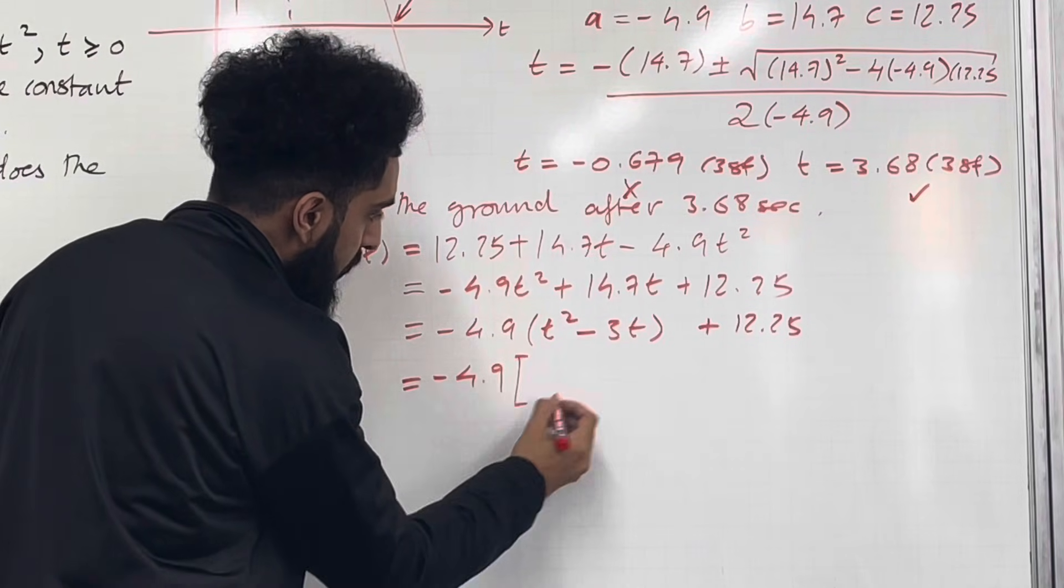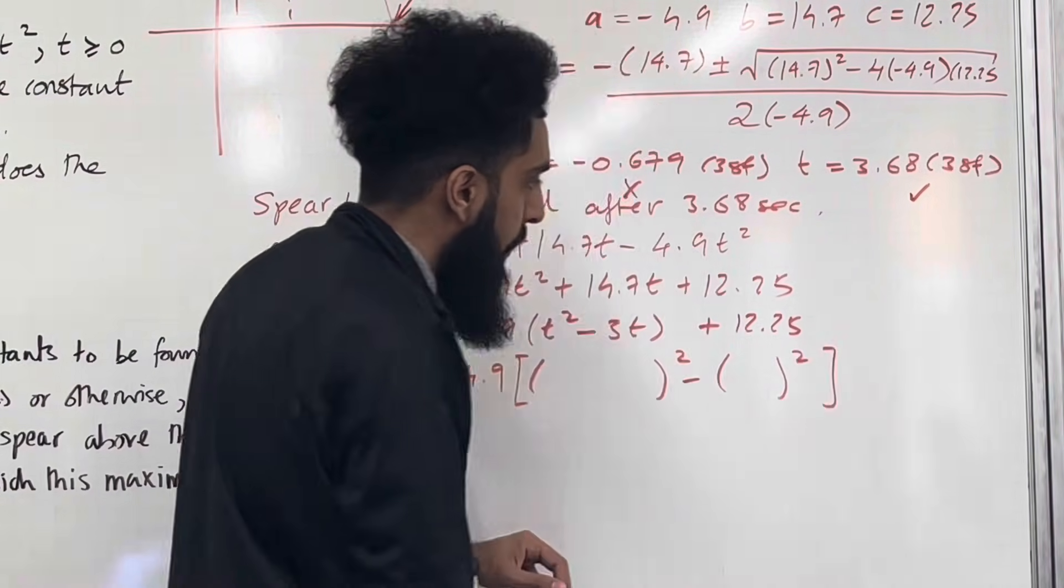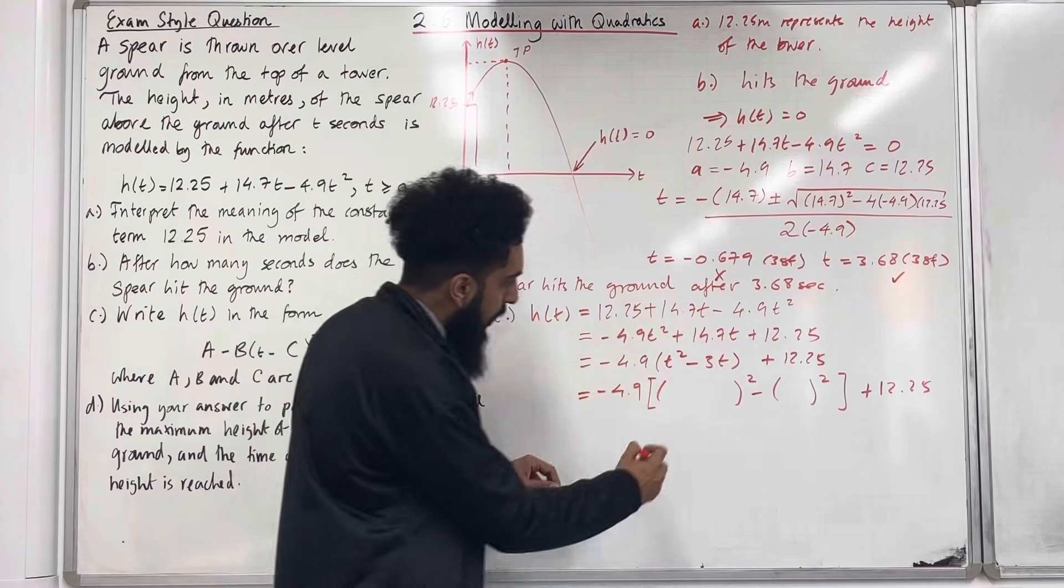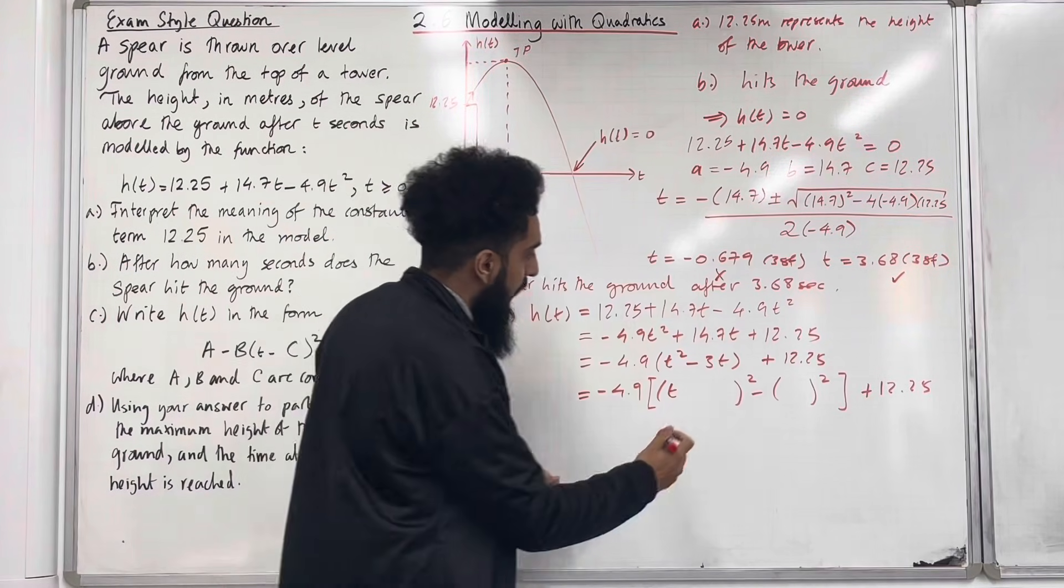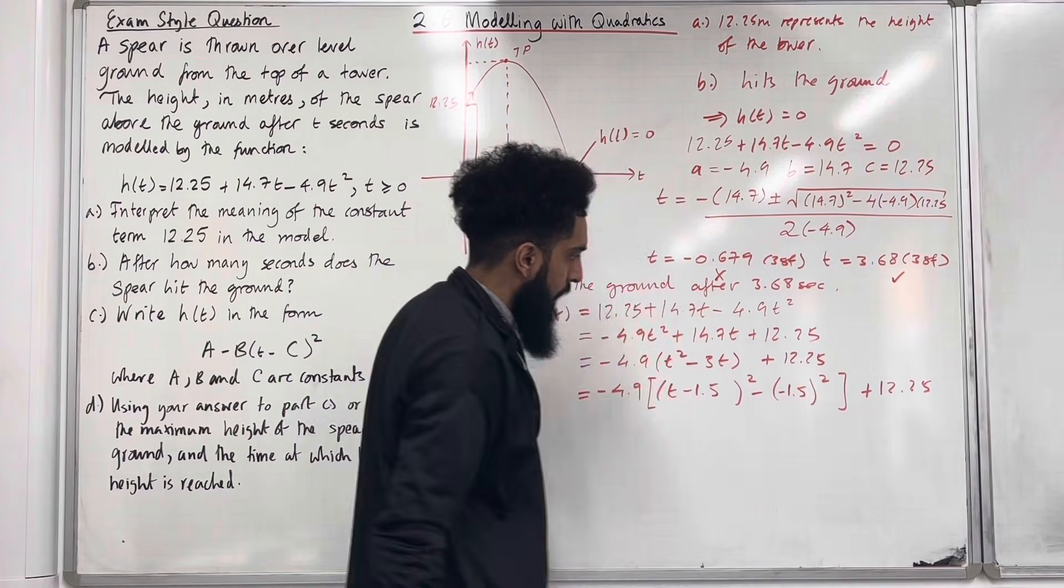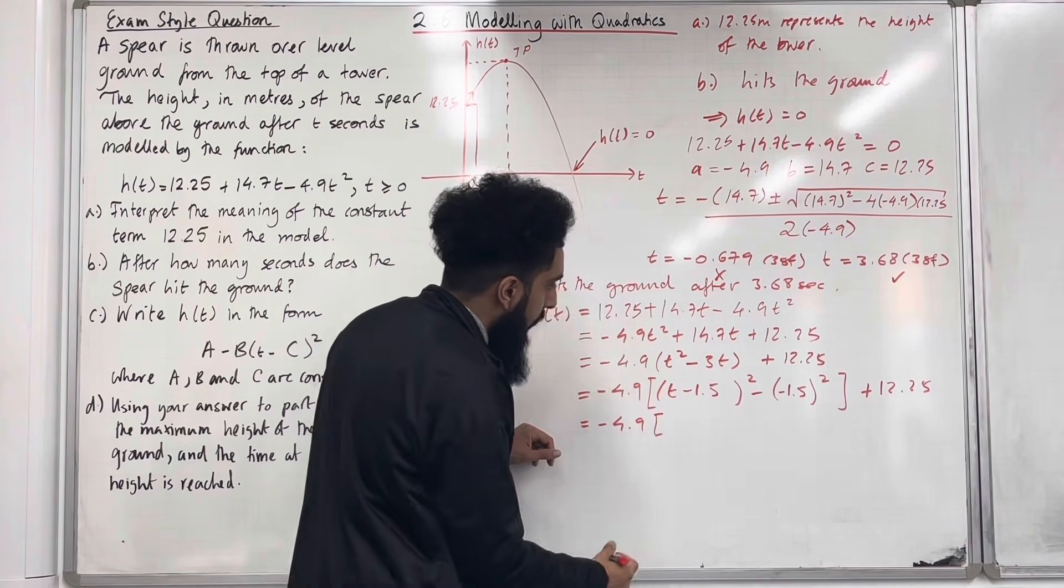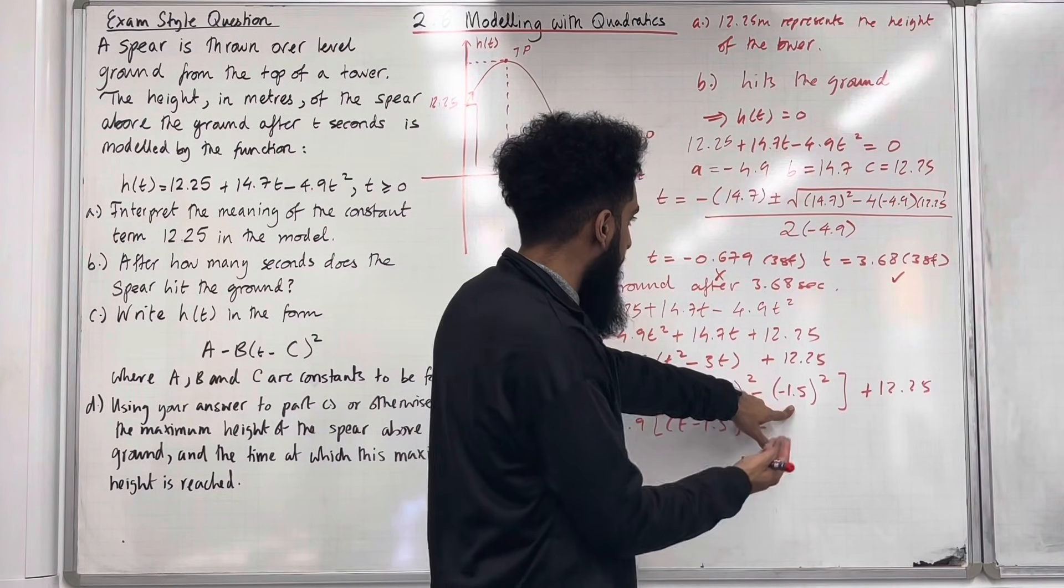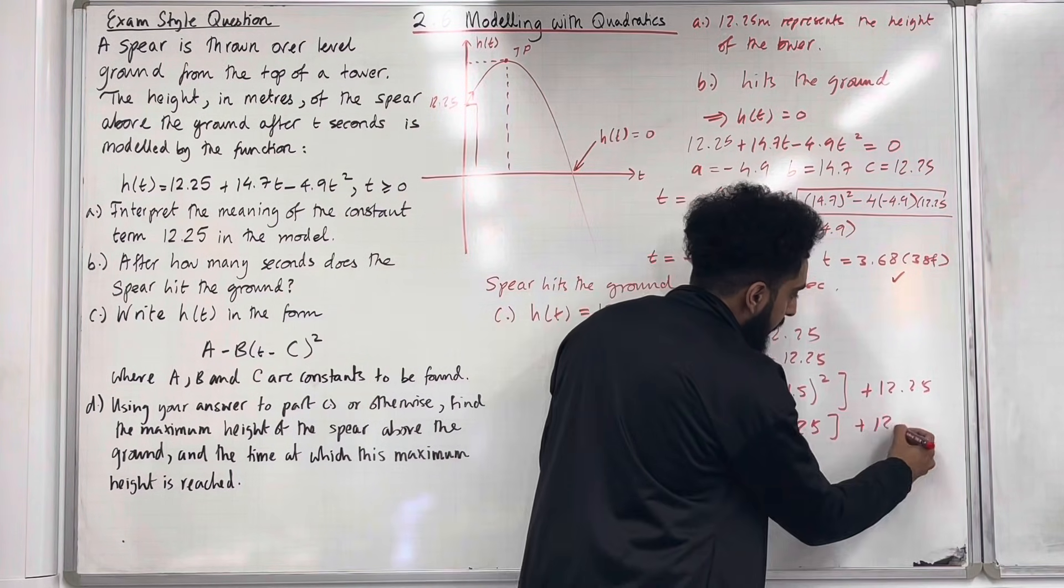So I have got -4.9, introduce square bracket. Bracket t squared minus bracket t squared, close the square bracket plus 12.25 on the outside. So inside this bracket I am going to put t. The minus 3 which is the coefficient of t, I need to divide that by 2. So if I do that I get minus 1.5. And that minus 1.5 I stick it into this bracket as well. So now I need to clean this up ladies and gents. I have got -4.9 square bracket t - 1.5 squared minus, so I have got minus 1.5. If I square that this gives me 2.25, close the square bracket plus 12.25.